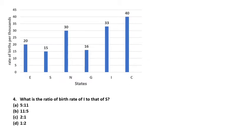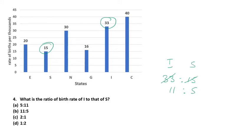Next question: what is the ratio of birth rate of I to that of S? I is 33 and S is 15. The ratio 33 to 15 — dividing both by 3 — gives 11 to 5. So 11 is to 5 is the correct answer.